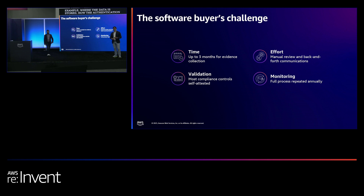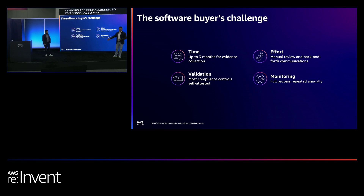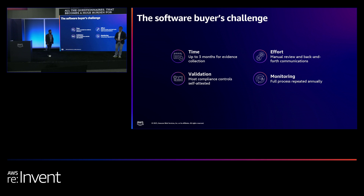This can add weeks and sometimes even months to the procurement cycle. It's a very manual process that requires a lot of back and forth between the vendor and the customer. The responses you're getting from software vendors are self-assessed, so you don't have a way to validate and check them. And finally, this process in many enterprise customers is repeated every year. Imagine you have a portfolio of over 200 SaaS products — you need to do this every year manually with all the questionnaires. That becomes a huge burden for your procurement teams and IT admins, and for developers it means their access to software is usually delayed because of those checks.